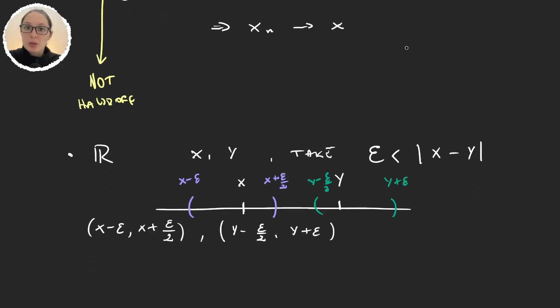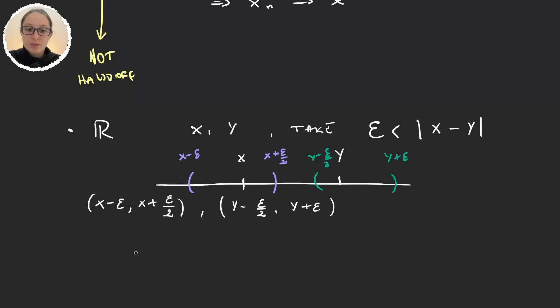What about the other topologies of the real line? We have RL, RU, RF, RC and many more. Why don't you try and prove if these spaces are Hausdorff?